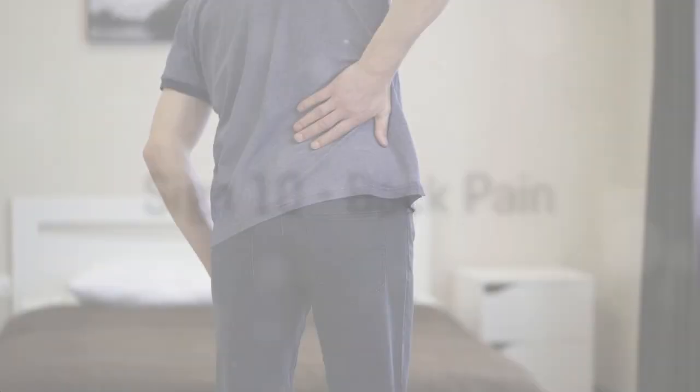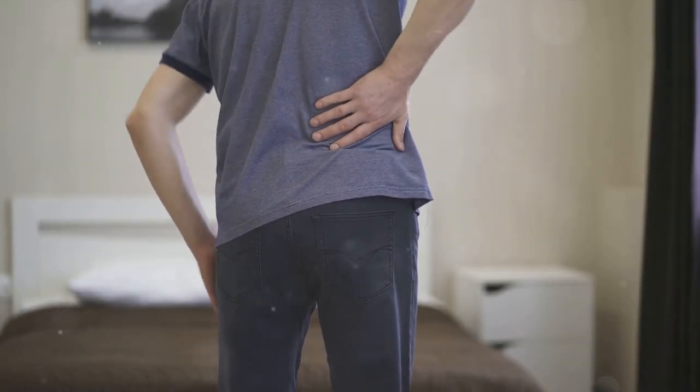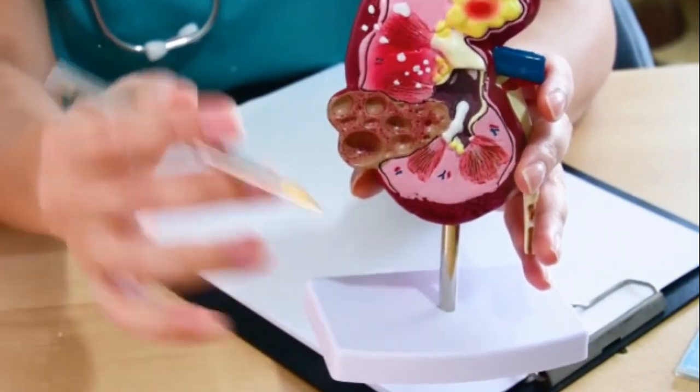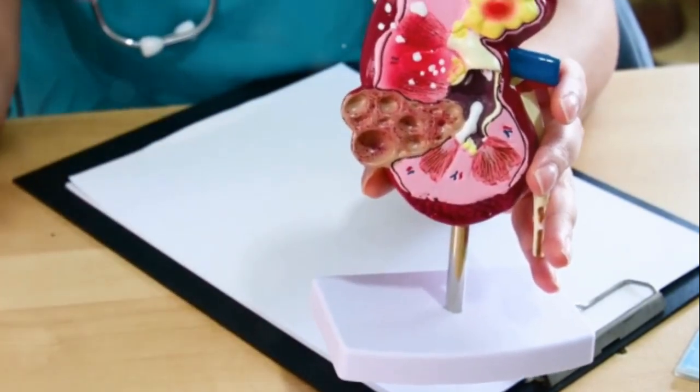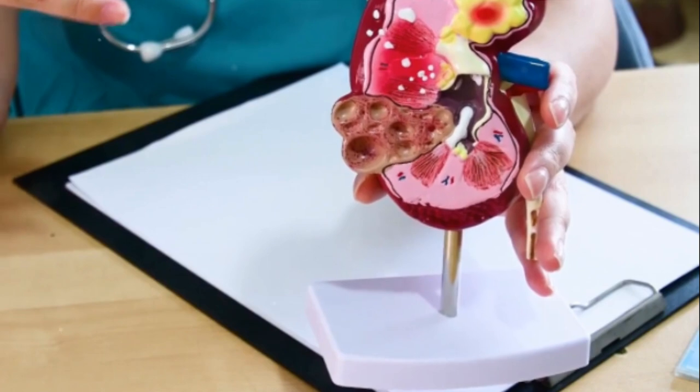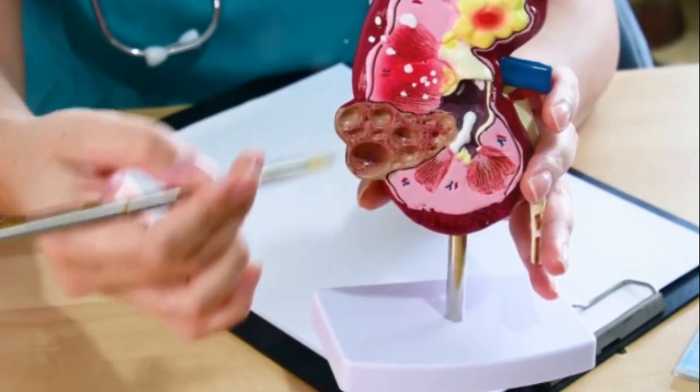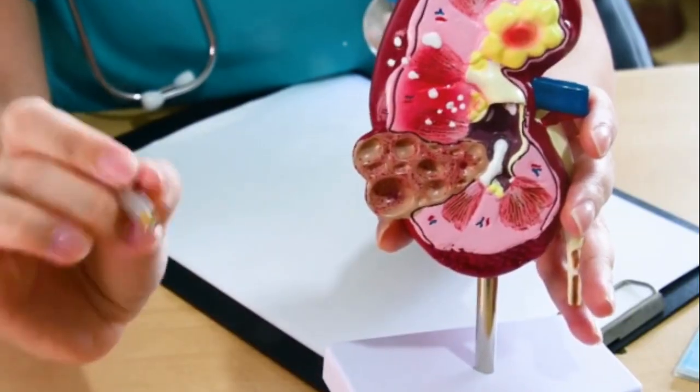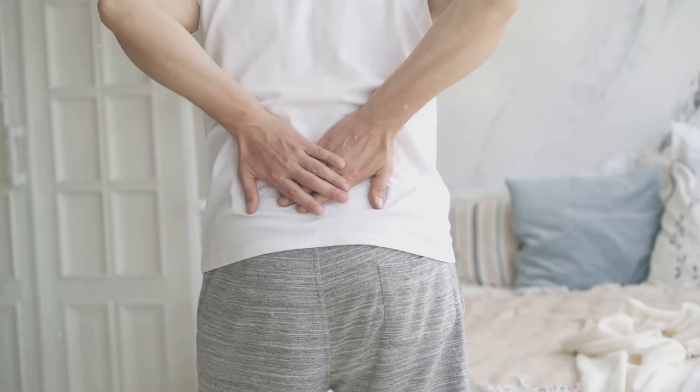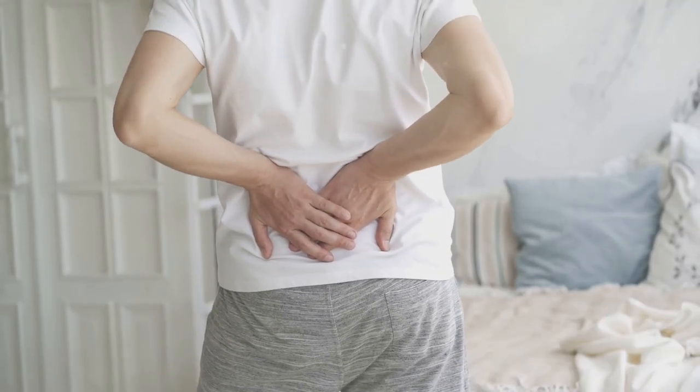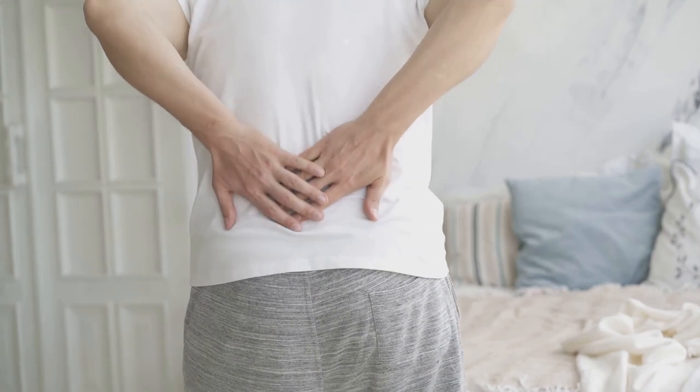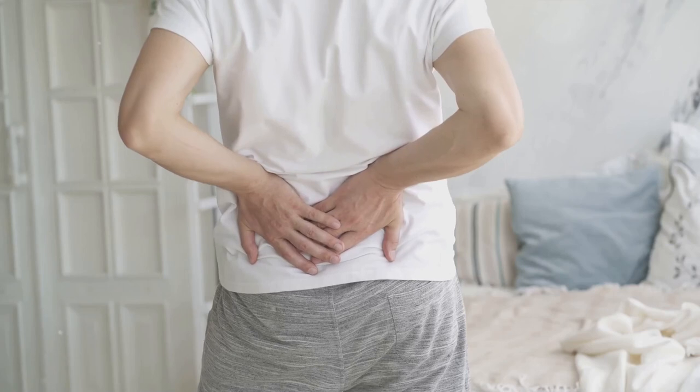Finally, the tenth sign, back or side pain. Now you might be thinking, isn't that just a sign of bad posture or a strenuous workout? That's not always the case. Chronic kidney disease can cause pain in the back or side. When kidneys are not functioning properly, they can cause discomfort, usually located under the rib cage or the lower back. This happens because kidneys are located in this area. When they're inflamed or enlarged due to disease, they can cause pain that often gets mistaken for other common conditions.